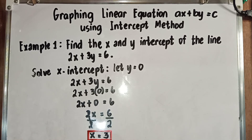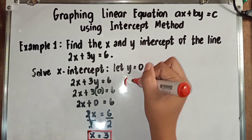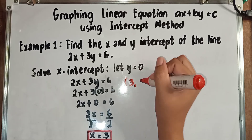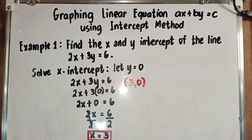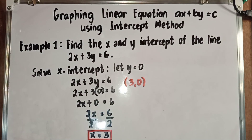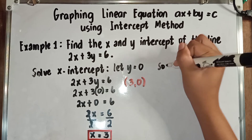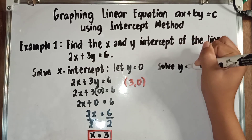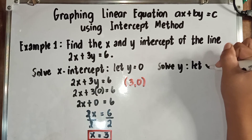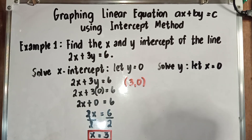So our X is 3. That means we already have our first ordered pair. Our X is 3 and our Y is 0. Now, how about we let X equal to 0? We need to find two ordered pairs. After letting Y is equal to 0, in the next step we will let X is equal to 0 — solve for Y and let X is equal to 0.